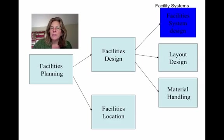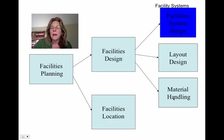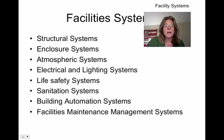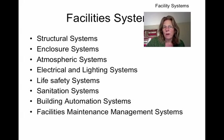Now we're going to start looking at another aspect of facilities design. We've spent a lot of time on layout design. We're going to look a bit more at facility system design and then follow that by material handling. Facility system design encompasses all of these seven or eight different categories, and we're going to look at them one at a time.